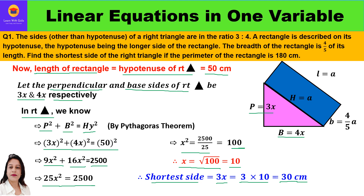This is how we have solved this question. First, we started with the perimeter and found the length and the breadth of the rectangle. Then this length became the hypotenuse of the right angle triangle. After applying the Pythagoras theorem, we found the shortest side of the right angle triangle.